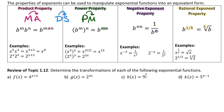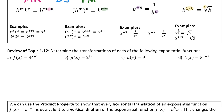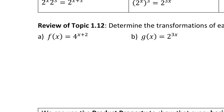Let's also review topic 1.12, which was all about transformations of functions. Transformations that occurred inside the function were horizontal transformations, and transformations outside the function were vertical. We're transforming exponential functions. If you zoom in on number one, it says 4 to the x plus 2. The inside of an exponential function is up in the exponent, so because x plus 2 is up in the exponent, it is inside the function. This x plus 2 is affecting the inside, so we've taken 4 to the x and horizontally translated it.